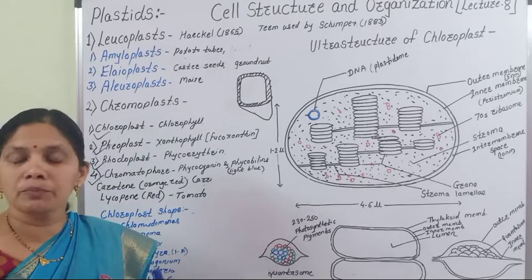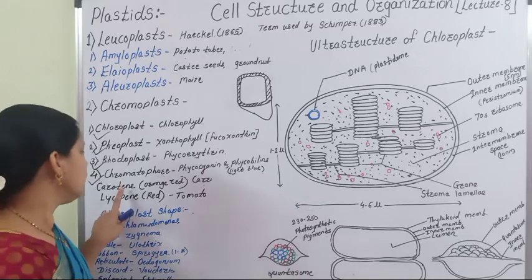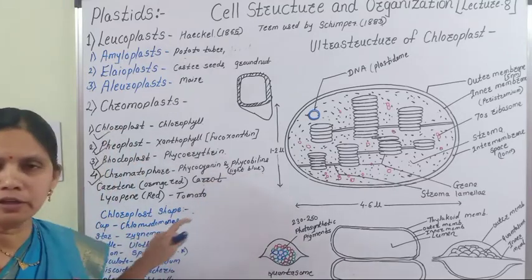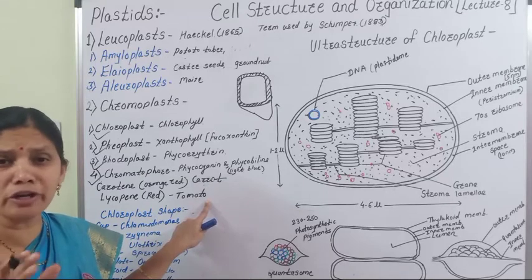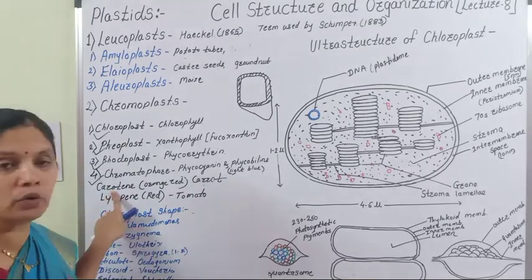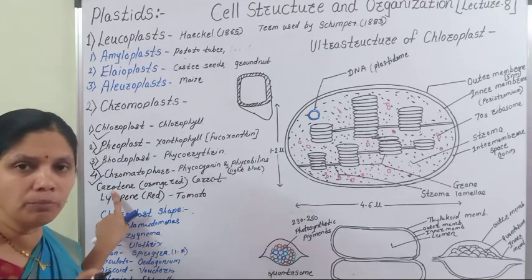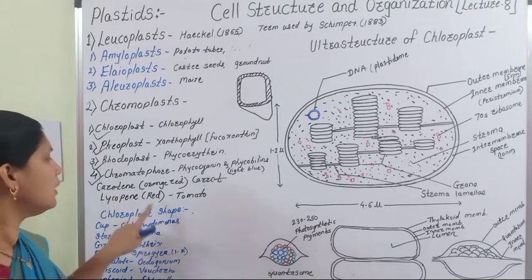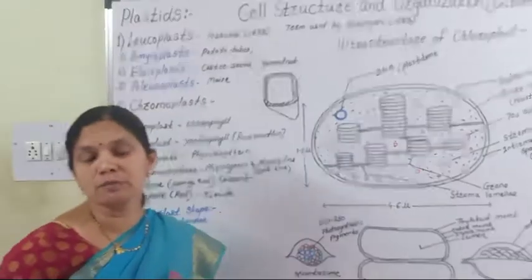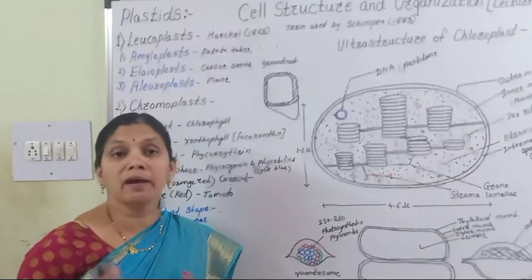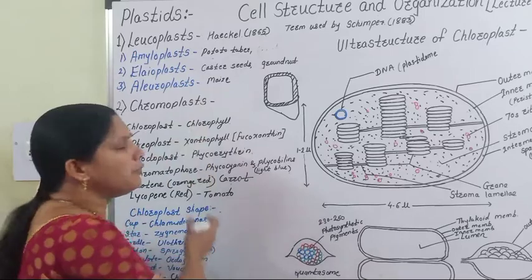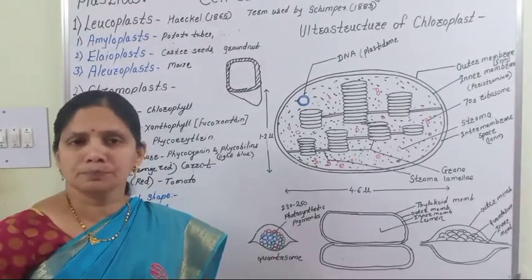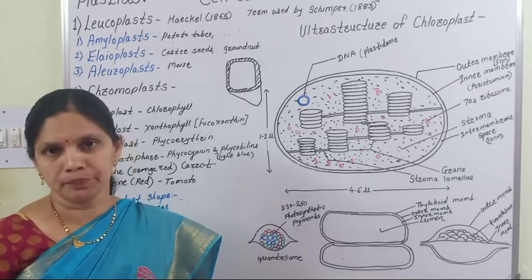Due to Chromoplasts, different parts of plants appear in different colors. For example, in carrot, the orange-red color is due to the presence of carotene pigment, and they appear orange-red in color. In tomato, the lycopene pigment is present, due to which they are red in color. These are the different chromoplasts, and due to their presence, various plant parts are colorful.